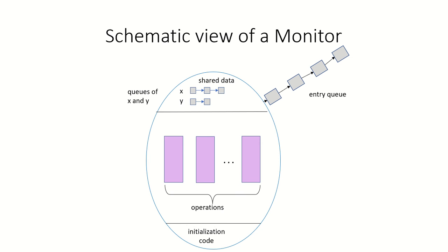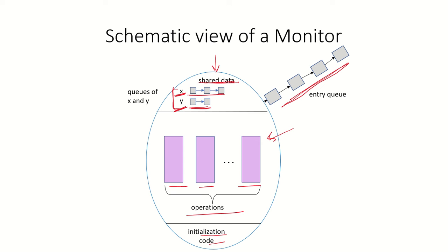Looking at the schematic view of a monitor, we can see that there is some shared data which is declared, along with condition constructs and queues for processes waiting on those conditions — certain processes waiting on the x condition and certain processes waiting on the y condition. There will be a set of procedures or functions which can work on this shared data, along with some initialization code. There is also an entry queue — the set of processes which wish to use this monitor. One by one, processes will be allowed to use the monitor and make use of the mutual exclusion constructs it provides.